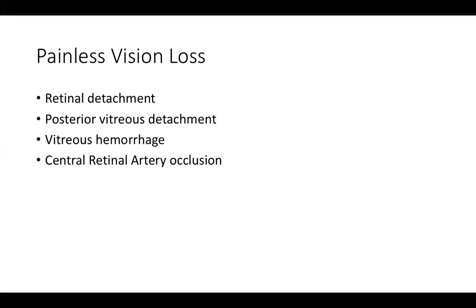Now let's go over the other indication: evaluating for painless loss of vision. This is really the key use for ocular ultrasound, because many of these findings cannot be distinguished on physical exam alone. A retinal detachment versus a posterior vitreous detachment or vitreous hemorrhage is very difficult to distinguish clinically and can make a real difference in patient management. In cases of retinal detachment, you may want the ophthalmologist to intervene within 12 to 24 hours, so it's important to perform this scan and communicate your B-scan findings to distinguish between a retinal and vitreous detachment. Ultrasound can also help diagnose central retinal artery occlusion, though that is a more advanced feature.